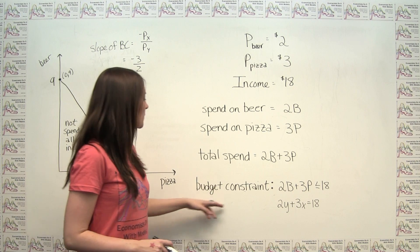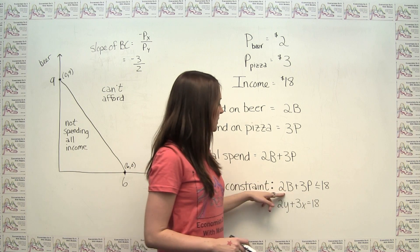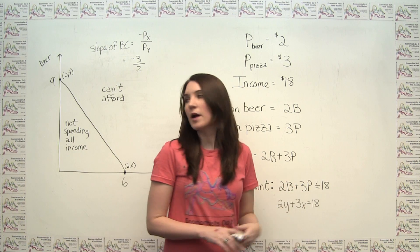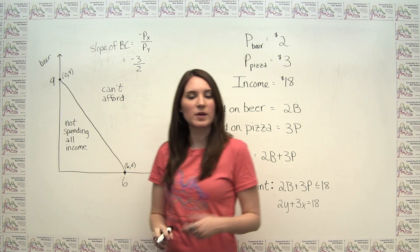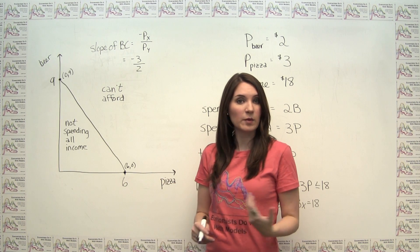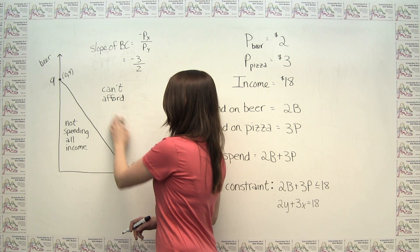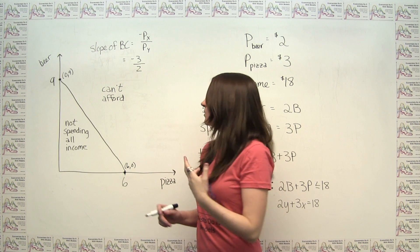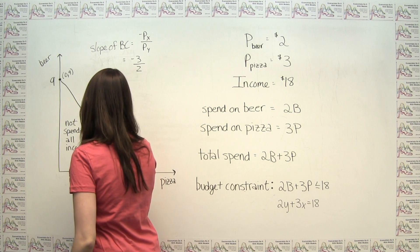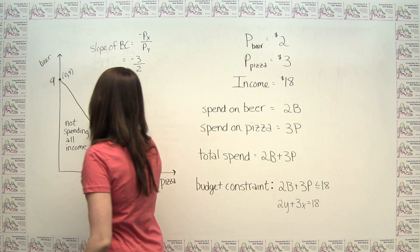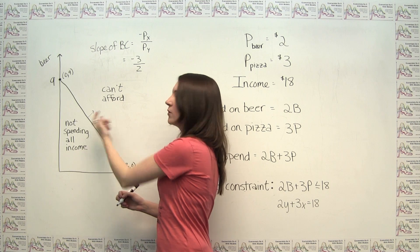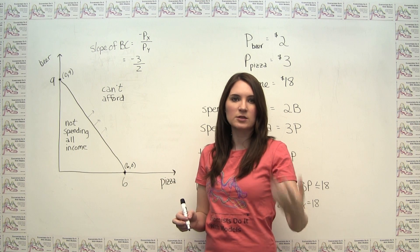As we said before, the budget constraint technically represents all of the combinations of the two goods where we're spending less than or equal to our income. And then the line that we graphed here was the set of points where we were spending all of our income. So it's worth thinking about what the areas on the different sides of this line represent. If we look out here, anything outside of this budget line are the set of points that the consumer can't afford. Because what you'll notice is that this is the set of points where the consumer is consuming more of both of the items. And if the consumer is spending all of her money at this point here, she's not going to be able to afford to increase her consumption without having to decrease the consumption of something else.